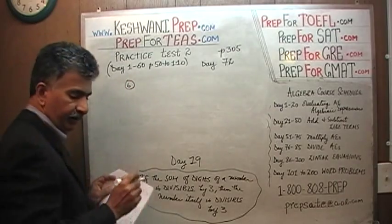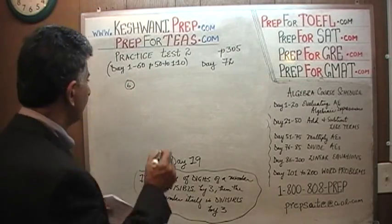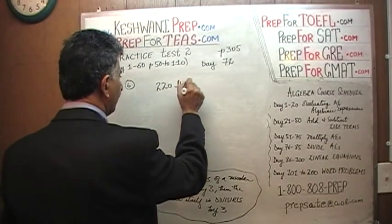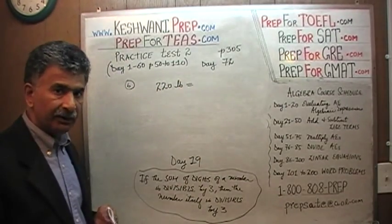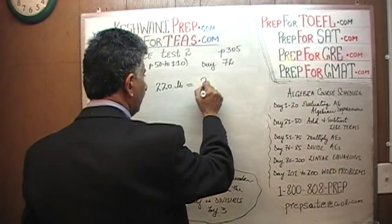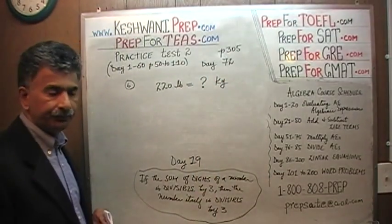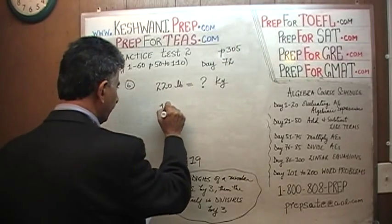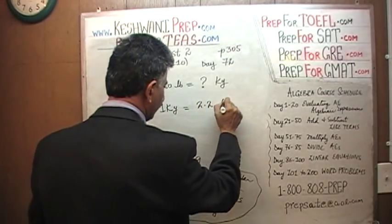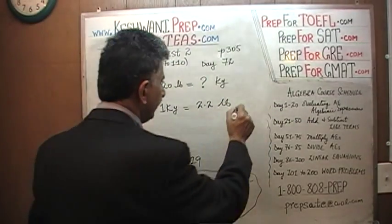In problem number 6, they basically tell us that a person weighs 220 pounds, and they want the weight of this person in metric units — in other words, they want to find out how many kilograms that is. That's all. We know that 1 kilogram equals 2.2 pounds. We learned this a long time ago.